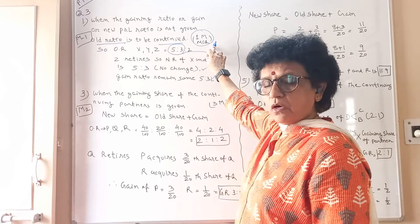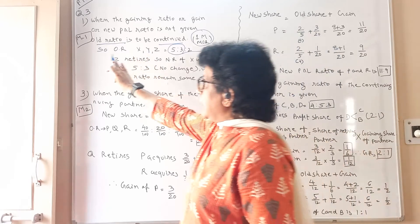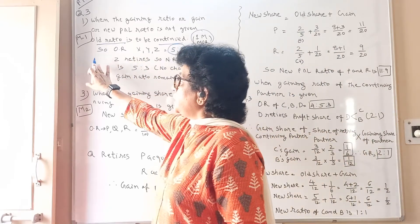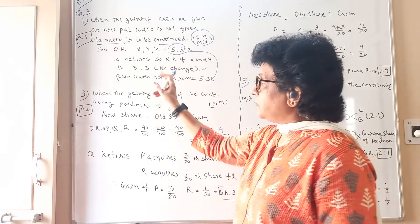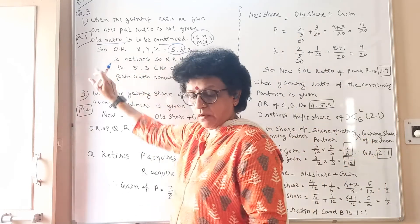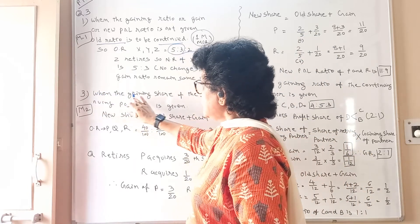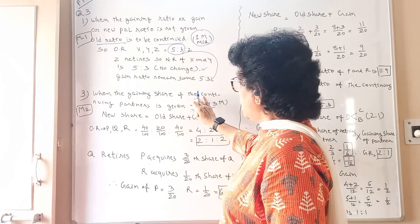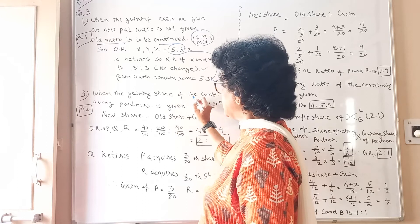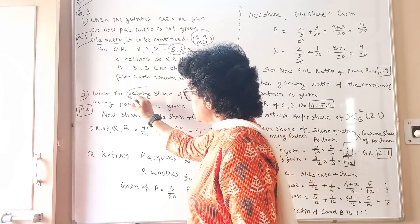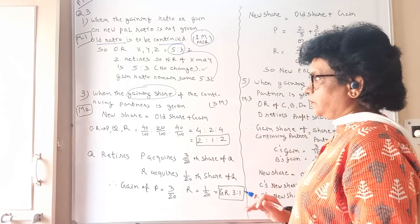So the gain ratio of the remaining continuing partners stays in the proportion of 5:3. This is an MCQ normally asked for a one-mark question. Method 1 is what we have just done. Now method 2 — when the gaining share of the continuing partner is given. Based on this information, we have to apply the formula and find the answer.